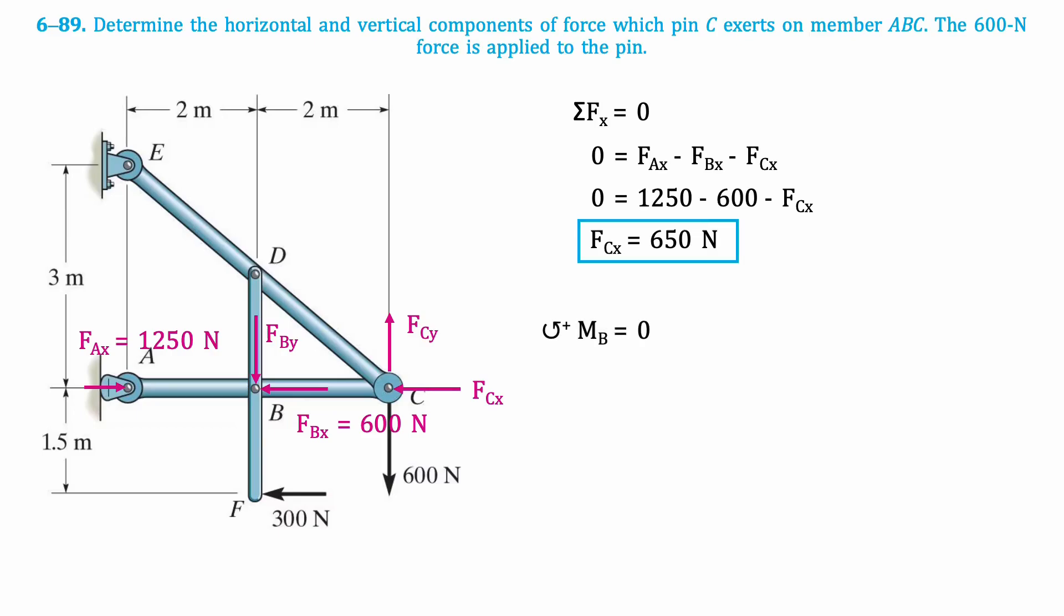Then we'll take the moment about point B. All forces except FCY pass through point B, so they are all excluded. This results in the following equation, which gives that FCY equals zero.